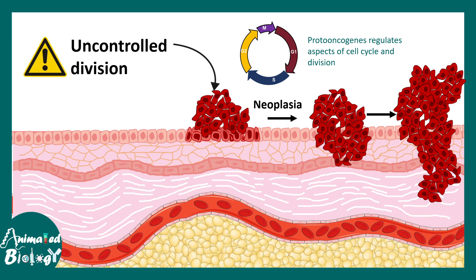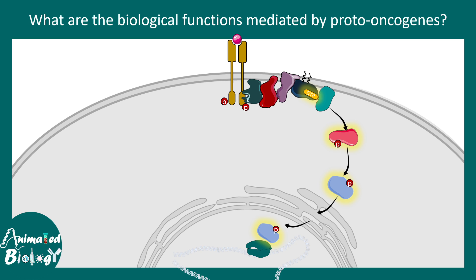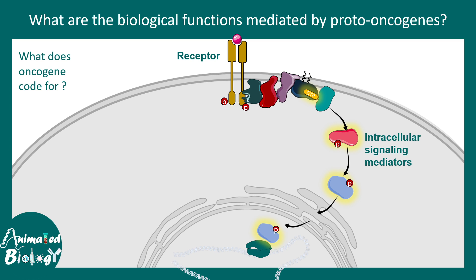Proto-oncogenes regulate aspects of cell cycle and cell division. If we understand what aspects of the cell cycle are regulated by proto-oncogenes, we get a better understanding of the overall biology. Looking at the big picture, there are many biological signaling pathways that regulate growth and proliferation — one such is the MAP kinase pathway. These pathways have several components, including receptors, intracellular mediators, and transcription factors.